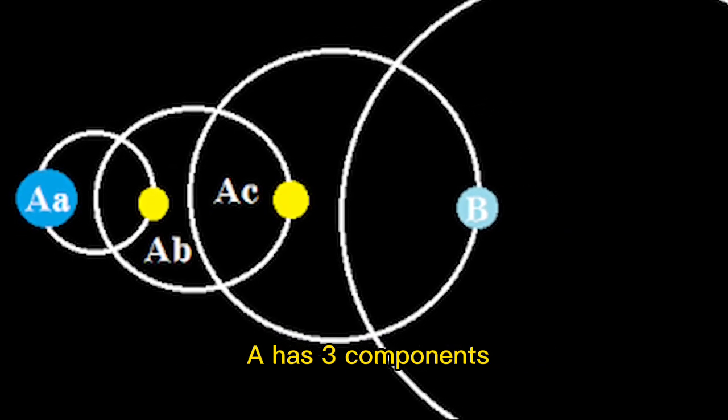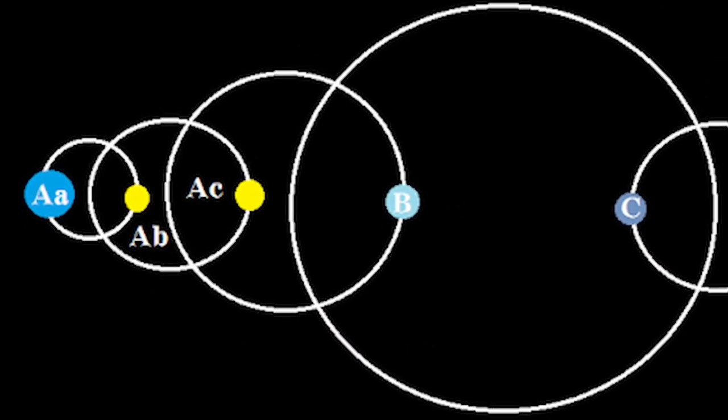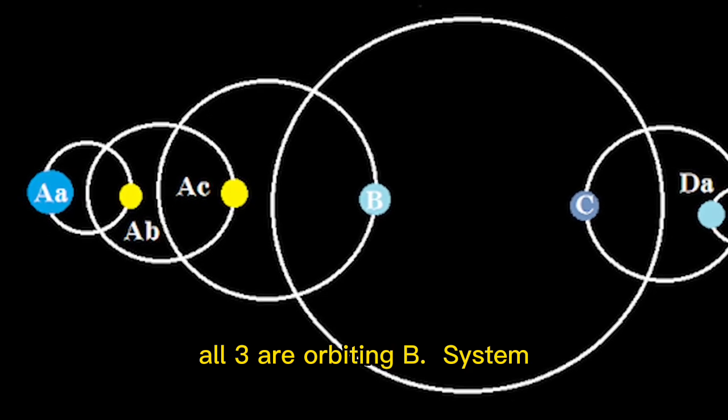A has three components with two orbiting each other, Aa and Ab, and the third orbiting both, Ac. All three are orbiting B.